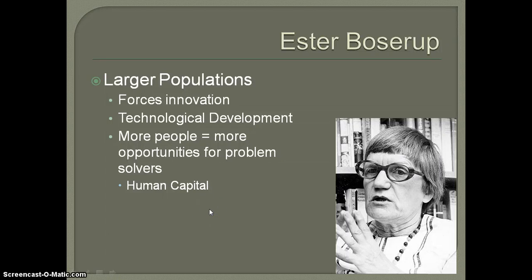Hello everyone and welcome back to another session of AP Human Geography with Mr. Elrod. We're continuing on with our conversation about population theorists. Our next population theorist is a woman by the name of Esther Boserup. She is a Danish economist who also studied agriculture and development and worked for the United Nations. Whereas our earlier theorists Thomas Malthus and Karl Marx were from an earlier era, Esther Boserup was living during the middle to late 1900s.